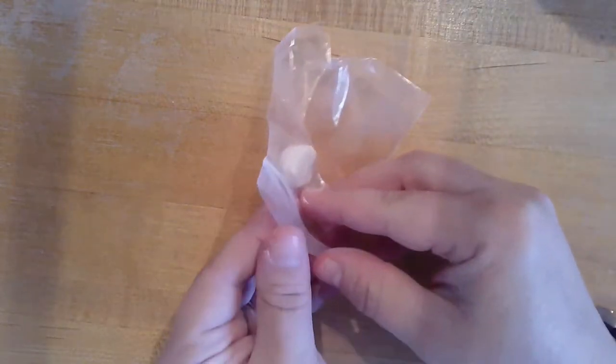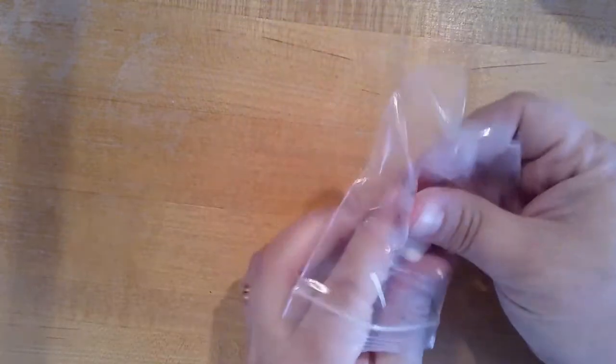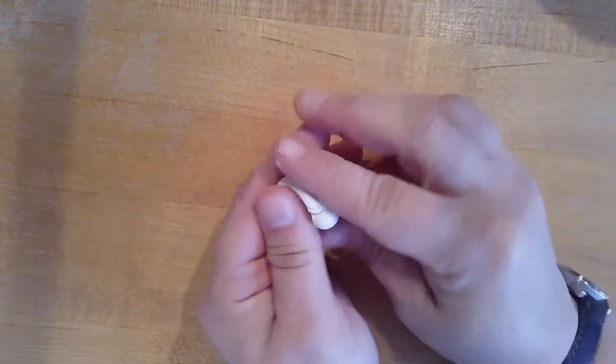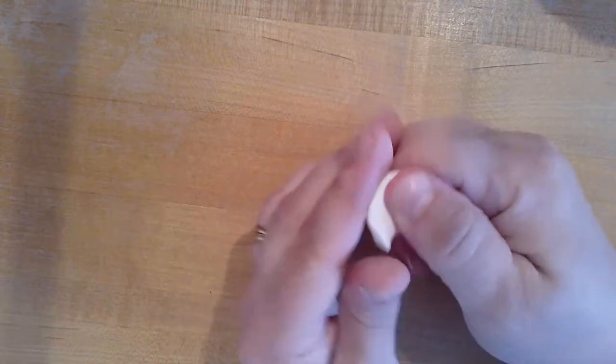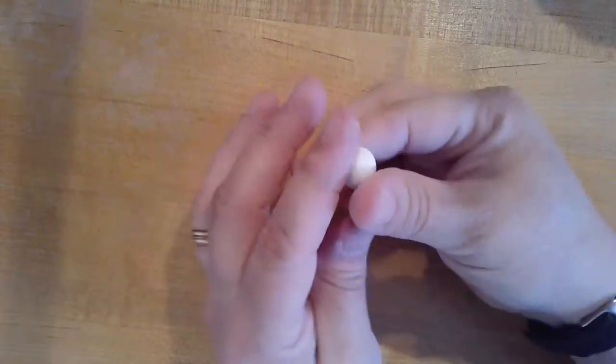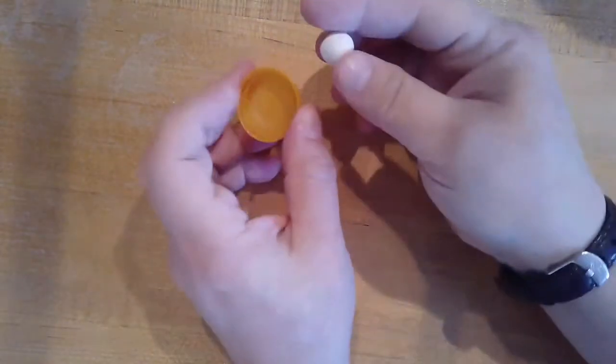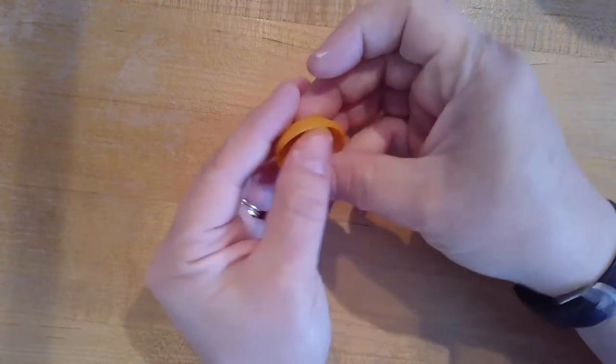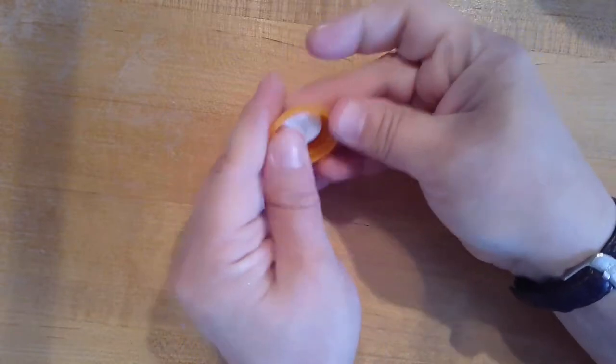All right, to get started, you're going to take your Sculpey Clay and pinch off a portion of it. You should have enough to make three snow globes, so you'll want to divide it into thirds. Pinch off a part, soften it up, and make a ball shape. You're going to use this to form a base for your slime charm so that it'll stand up straight in your snow globe.